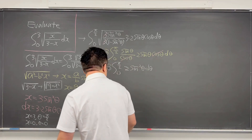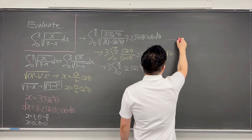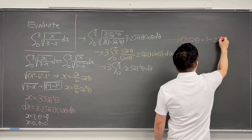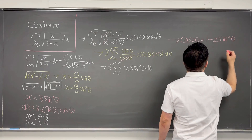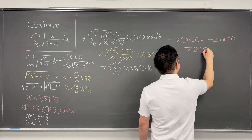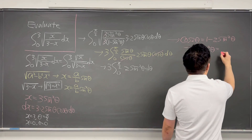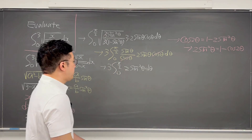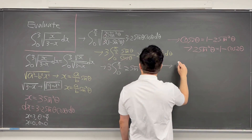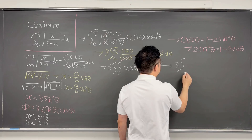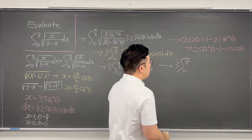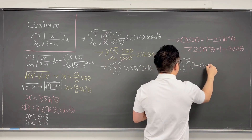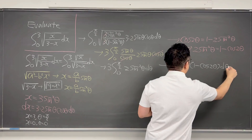So what we have now is 3 times integral from 0 to pi over 2 of 2 times sine squared theta, d theta. I'll be using the trigonometric identity once again — the double-angle formula for cosine. Cosine 2 theta equals 1 minus 2 times sine squared theta, so 2 times sine squared theta equals 1 minus cosine 2 theta. Let's use this. Then the integral is going to look like 3 times integral from 0 to pi over 2 of 1 minus cosine 2 theta, d theta.